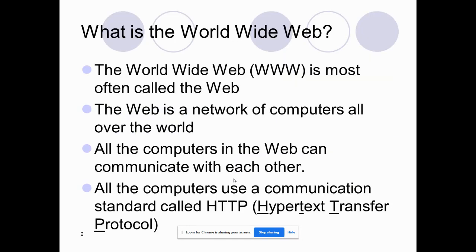What is the World Wide Web? It is a huge collection of pages which are linked to each other around the globe. One page is connected to another page, and another page is connected to another page. Every page is a combination of text, picture, audio, video, animation, and hypertext. So whatever web page you are going to access, these pages consist of so many combinations.